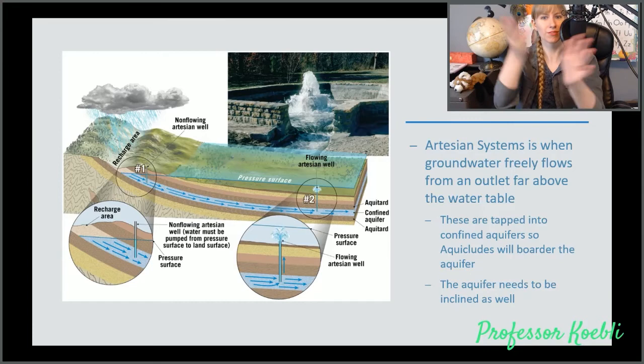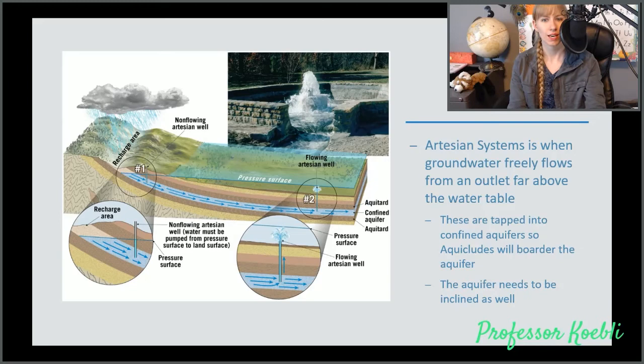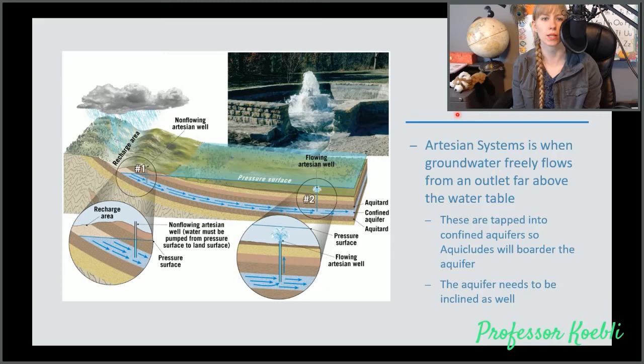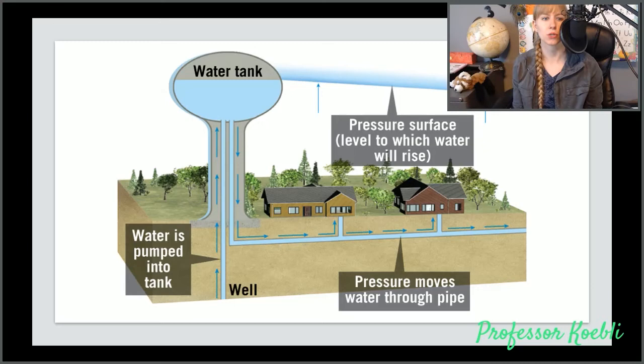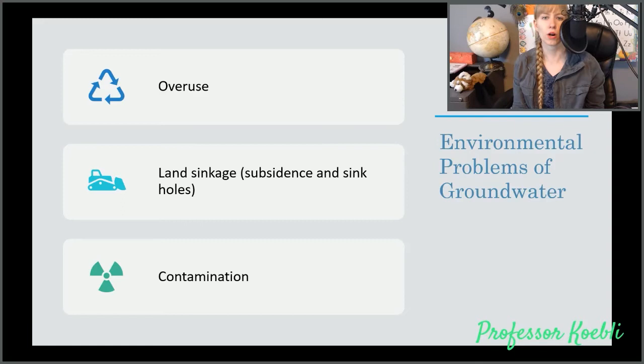Artesian systems are when groundwater flows freely from an outlet far above a water table. They are tapped into combined aquifers. Aquicludes end up bordering the aquifer and it needs to be inclined to create pressure. These were created in ancient Rome and they still are working to this day. That's part of how they were able to get fresh flowing clean water in the city as well as bathing water. Water tanks are another way. You pump water into the tank and then use gravity to create pressure on its own that moves water through the pipes and up into homes.